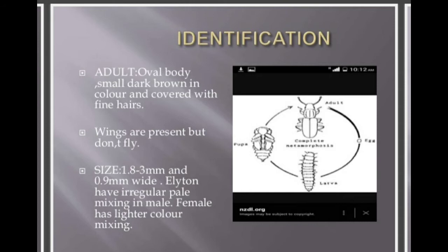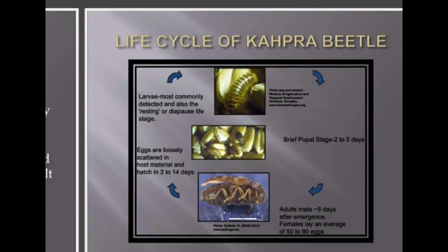If we see the adult, the shape of the adult is oval and it is small, dark brown in color, and covered with fine hairs. Wings are present but they don't fly. The size is 1.8 to 3 millimeters long and 0.9 millimeters wide. The female has a lighter color marking.